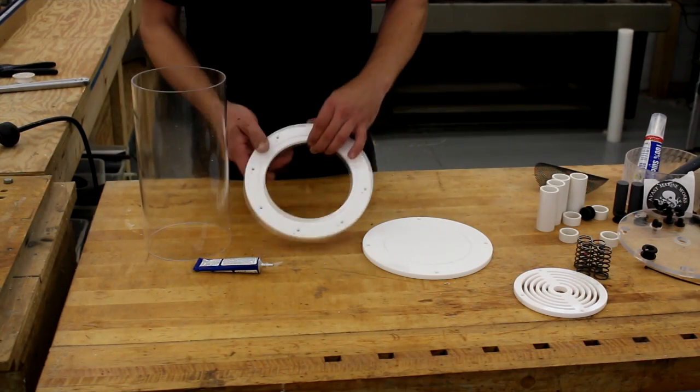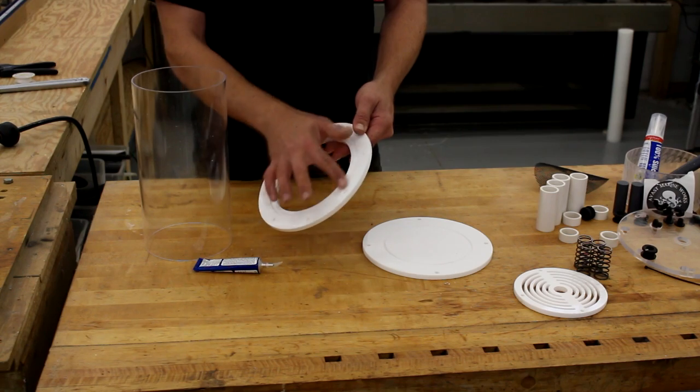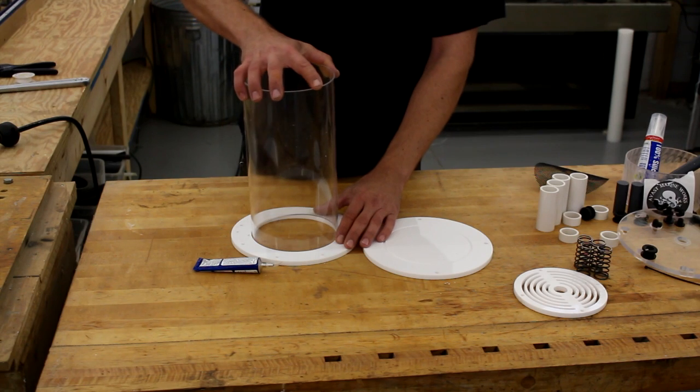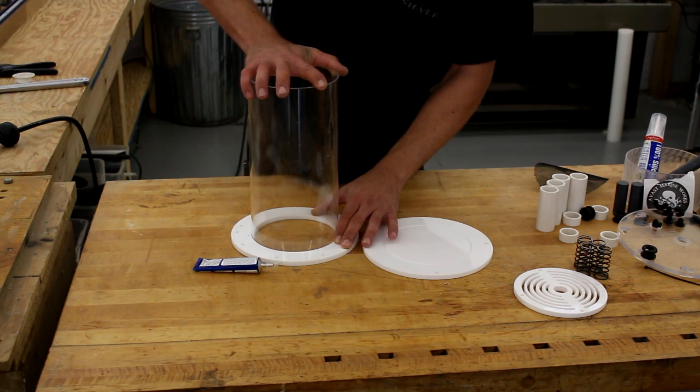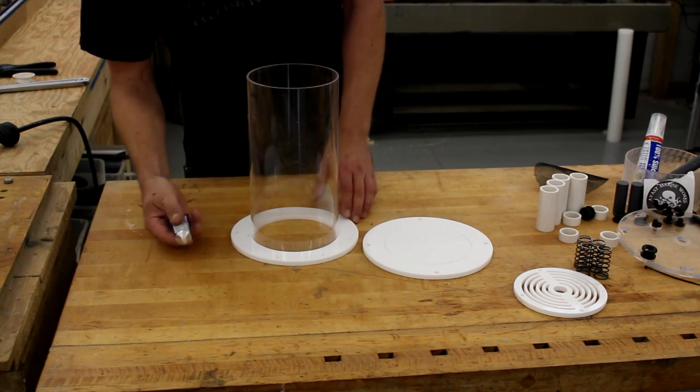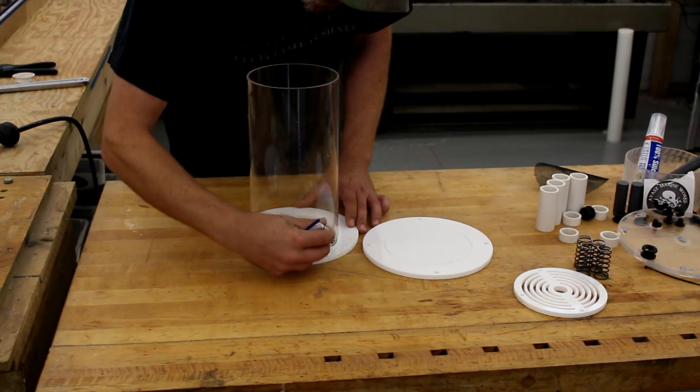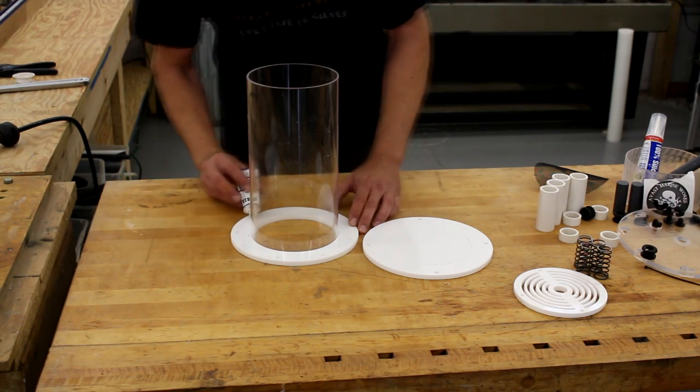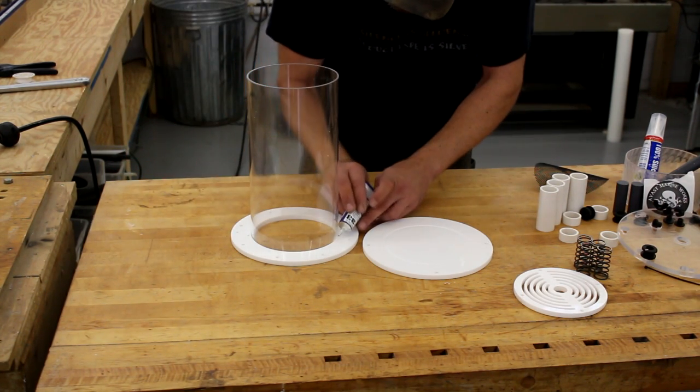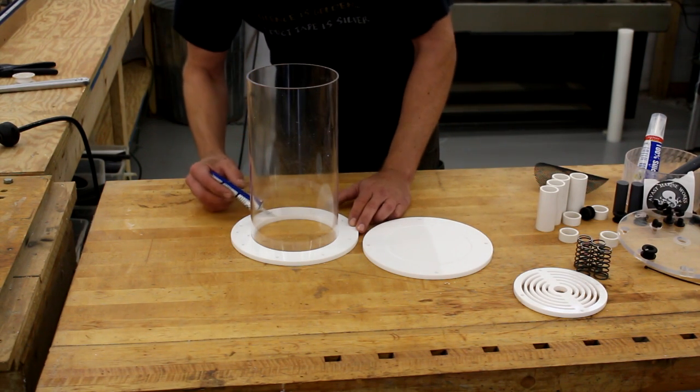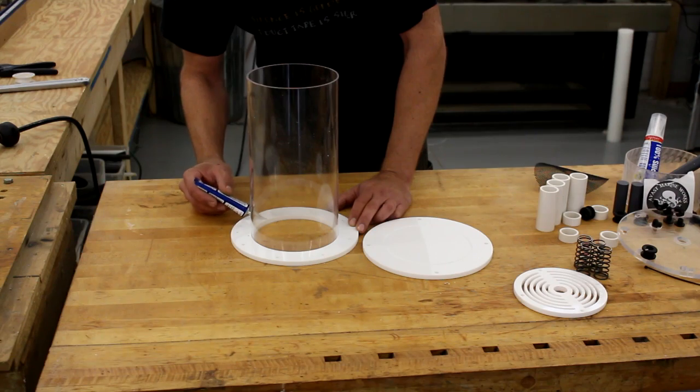We will start by assembling the reactor body. Take the flange with the o-ring groove facing down and glue the tube chamber to this. Make sure that the tube is fully pushed down until it bottoms out on the table. We are going to let this dry for one hour.